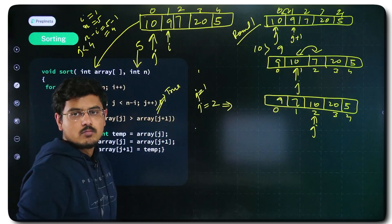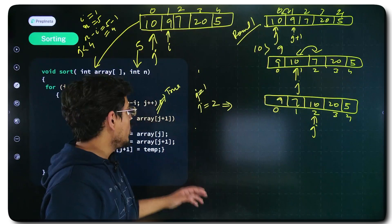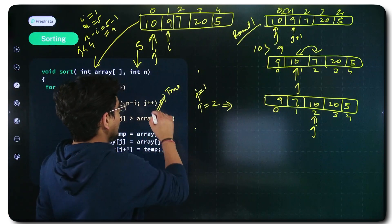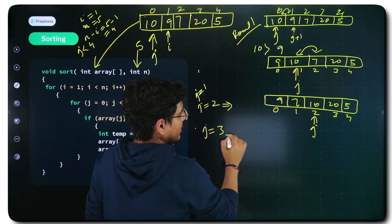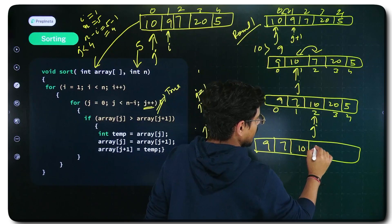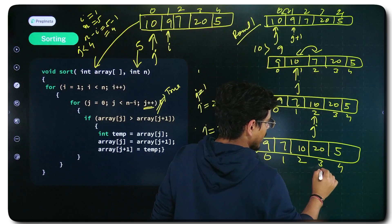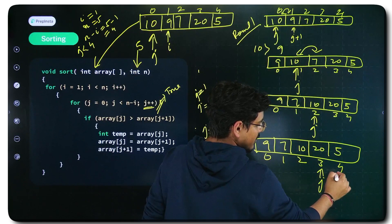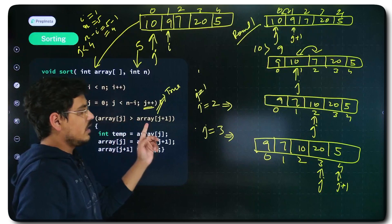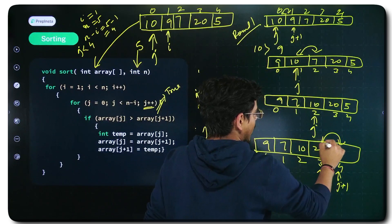For j equals 2, j points at 10 and j+1 is 20. Is 10 greater than 20? No, this condition is not true, so the swap block does not execute — do nothing. j gets incremented to 3. Now j points at 20 and j+1 is 5. 20 is greater than 5 — array[j] greater than array[j+1] is true — so the swap executes.